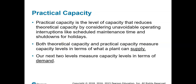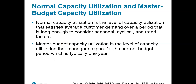Practical capacity takes theoretical capacity and reduces it by unavoidable operating interruptions like scheduled maintenance and shutdowns for holidays. Both theoretical capacity and practical capacity are based on supply — what we can supply to the market. The next two levels are based on demand. Normal capacity utilization is the level that satisfies average customer demand over a period long enough to account for seasonal, cyclical, and trend factors — typically two or three years. Master budget capacity is the level for only the current budget period, typically one year.